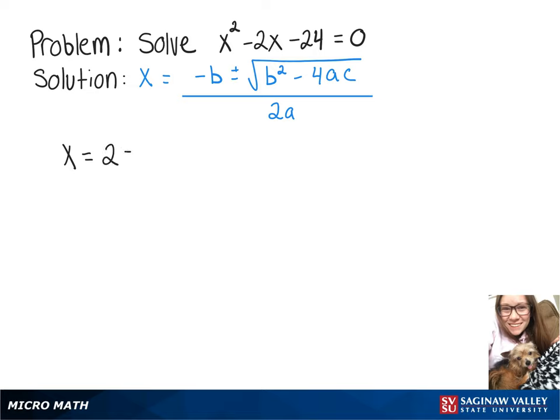So we'll end up with x equals 2 plus or minus the square root of negative 2 squared minus 4 times 1 times negative 24 over 2 times 1.